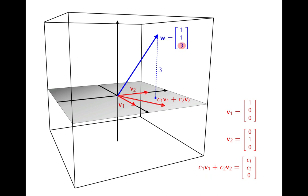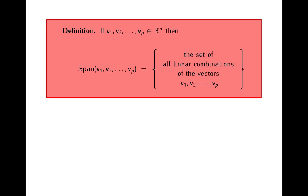What this example illustrates is that it is sometimes useful to look at the collection of all possible linear combinations of some specified vectors, because it makes geometrical sense. The collection of all possible linear combinations of v1 and v2 is geometrically represented by the xy plane, since linear combinations of v1 and v2 are precisely the vectors that belong to this plane. This motivates the following definition: if we have some vectors v1 through vp in Rn, then the span of these vectors is the set of all possible linear combinations of these vectors.